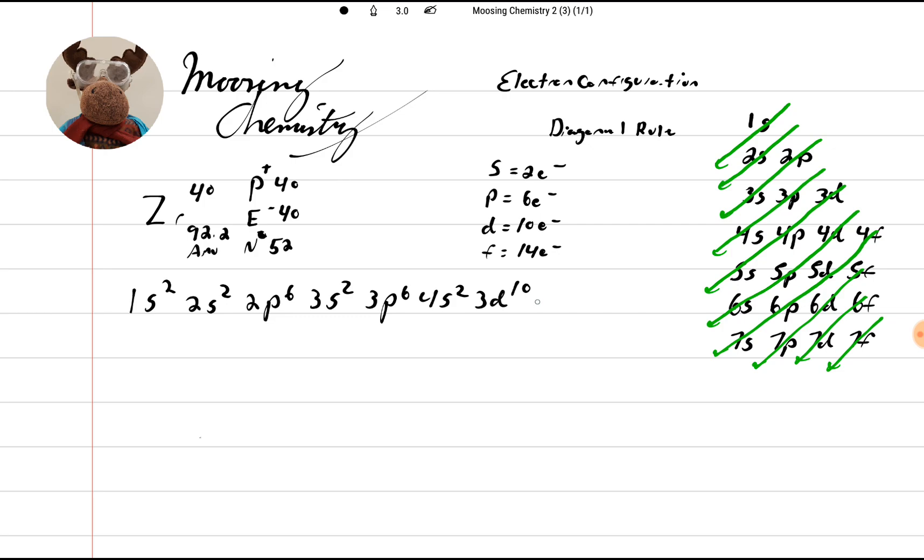So then we go 3d10, 4p6. So this is going to give me 36, 5s2, and then after 5s2 comes 4d2. That's the electron configuration.